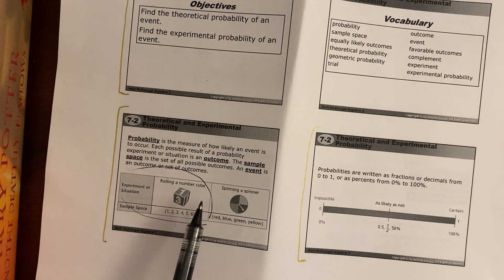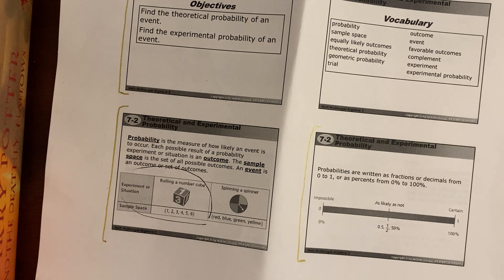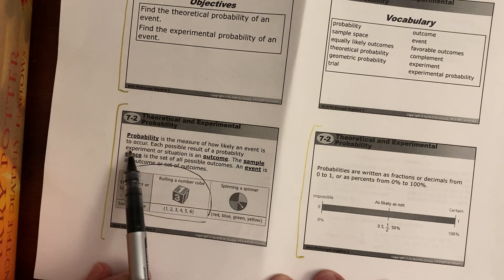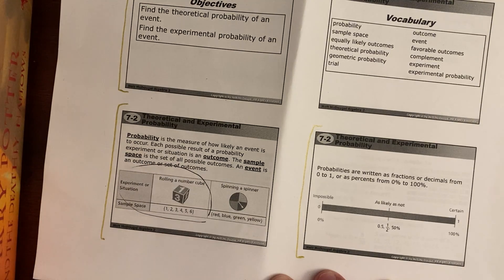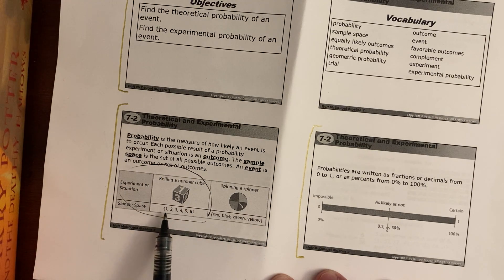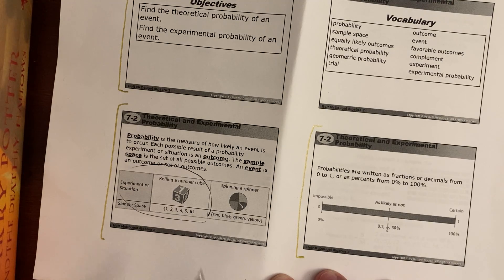Our experiment would be rolling a number cube, like a regular die, where we have one side that's a one, two, three, four, five, and six. So rolling a three is an outcome. The sample space is the set of all possible outcomes — we could roll a one, two, three, four, five, or six.